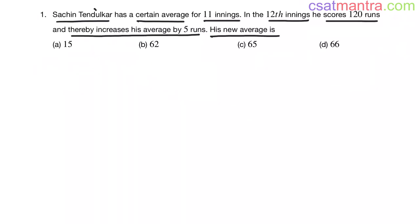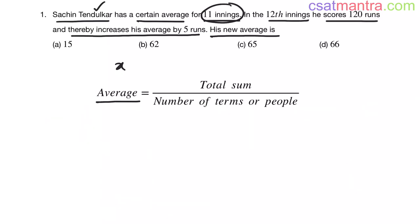Let's assume Sachin's average for 11 innings as x. Innings means match. Now we know average equals total sum by number of terms or number of people. Average we know that is x. x equals total sum, we do not know. Number of terms, number of innings, 11. So total sum equals 11 into x.